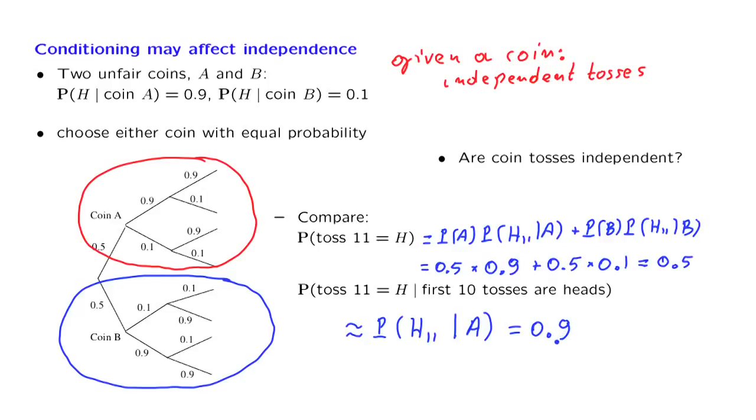So the conditional probability is quite different from the unconditional probability, and therefore information on the first 10 tosses affects my beliefs about what's going to happen in the 11th toss, and therefore we do not have independence between the different tosses.